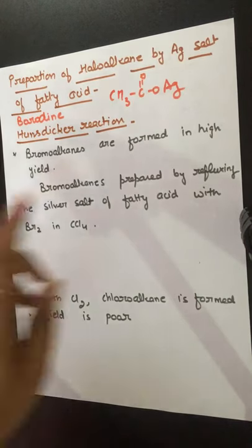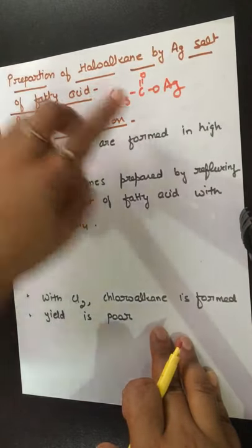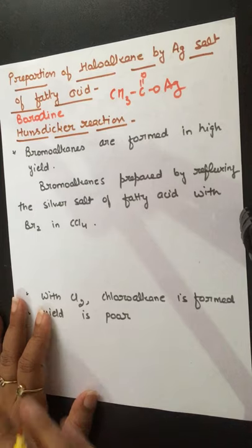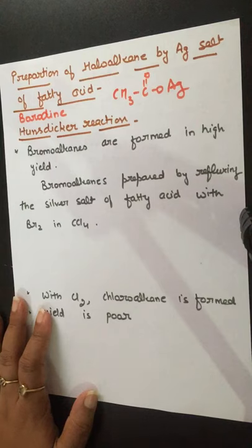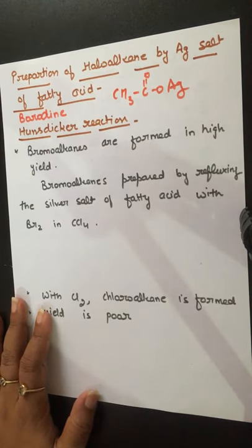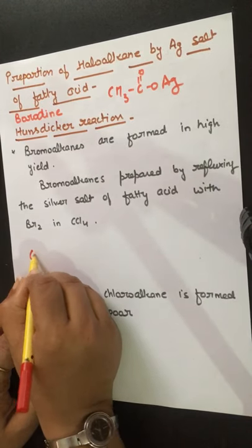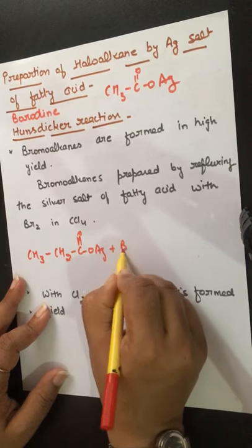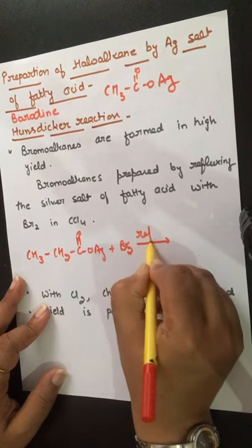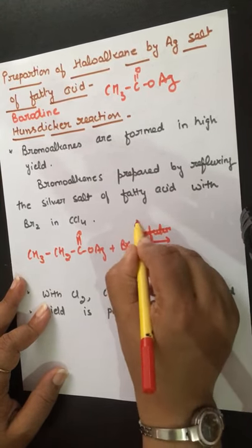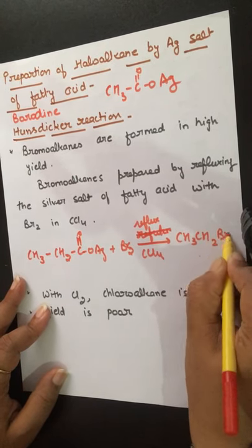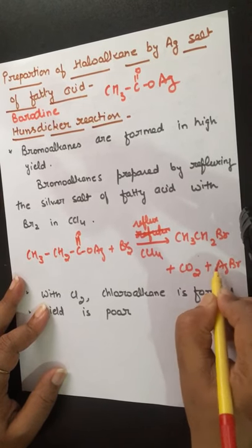How will we make bromoalkane? We make bromoalkane by refluxing the silver salt of fatty acid with bromine in CCl₄ solvent. In this reaction, silver salt of fatty acid is refluxed with bromine in the presence of CCl₄. It gives out bromoalkane — CH₃CH₂Br — with the evolution of CO₂ and AgBr.